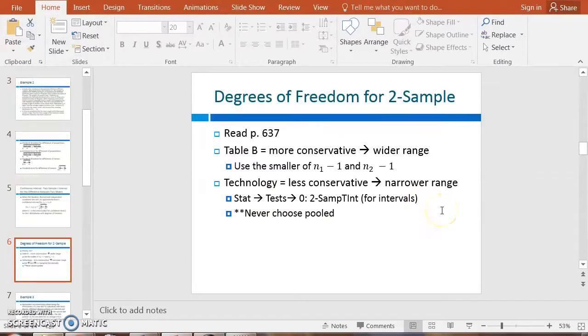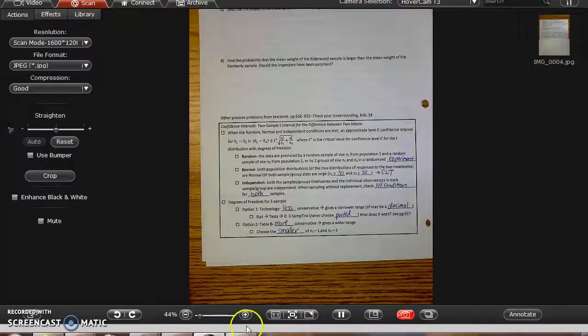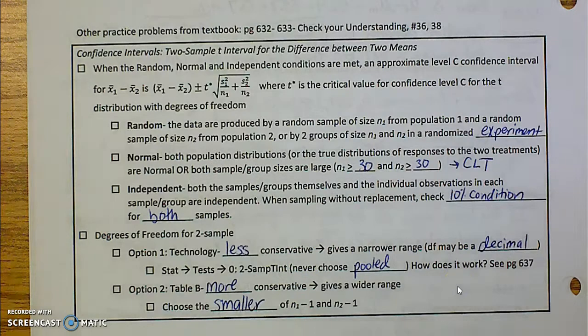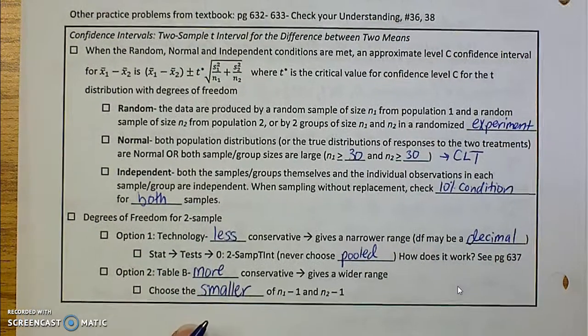You go to stat, go to test, choose option zero, and that gives us the thing for intervals. Now at the bottom, they'll ask you about if you want to use pooled. We will never use pooled when it comes to confidence intervals. So here's what this looks like on your notes.